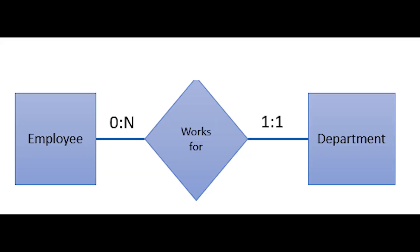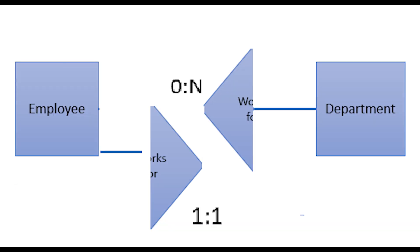Relationships are represented using a rhombus and they present an association between one or more entities. For example, entity types business and customer — customer buys something from business, so a relationship is created between the two. The degree corresponds to the number of entity types in the relationship: unary means one entity involved, binary means two, ternary means three. In the employee and department example, we have two entity types — a binary relationship.